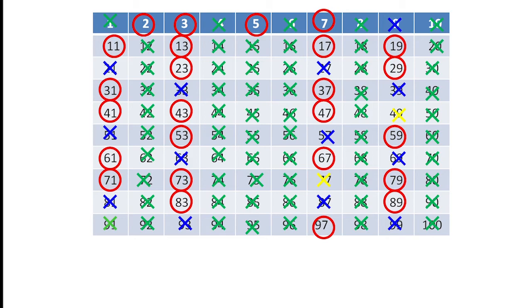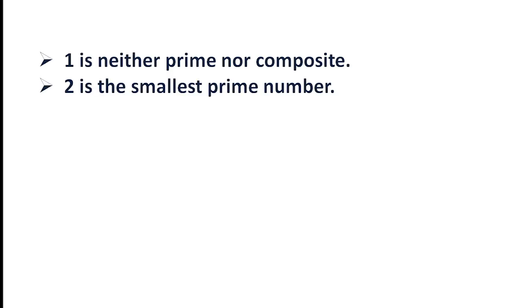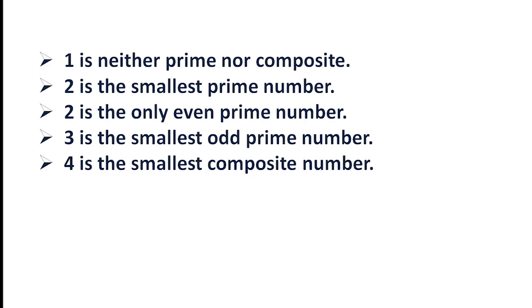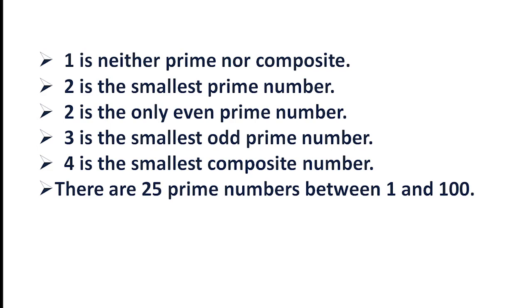This method is very useful and easy. We cross out all the multiples and circle the prime numbers. Since 1 is neither prime nor composite, we cross it out as well. This is very useful in higher classes, so we must know all the prime numbers between 1 and 100. From this we have learnt: 1 is neither prime nor composite; 2 is the smallest prime number and the only even prime number; all multiples of 2 are composite; 3 is the smallest odd prime number; 4 is the smallest composite number; and there are 25 prime numbers between 1 and 100. Hope you would understand the concept. Thank you.